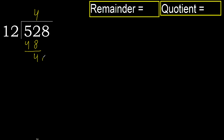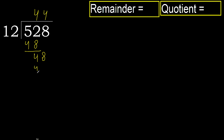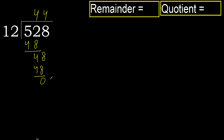Next: bring down 8, making 48. 12 multiplied by 4 is 48, which is not greater. Ok, subtract. Result is 0. Next, there is no number, therefore finished.